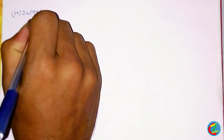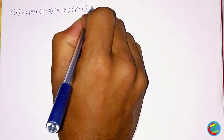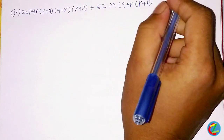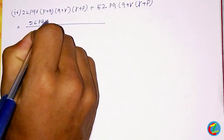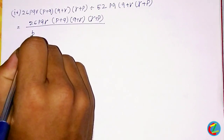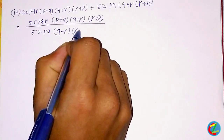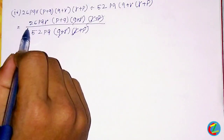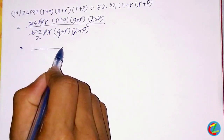Next: 26 pqr into p plus q whole, into q plus r whole, into r plus p whole. This gives 52 pq into q plus r whole, into r plus p whole. So 26 pqr into p plus q whole into q plus r whole into r plus p whole equals 52 pq into q plus r whole into r plus p whole.